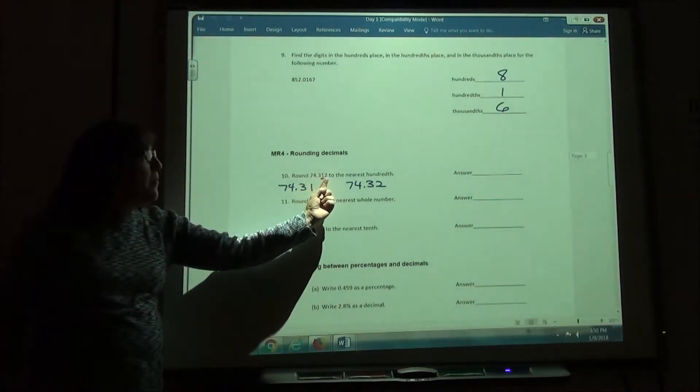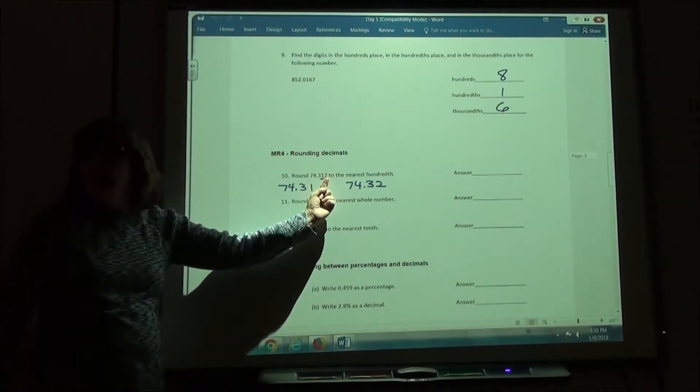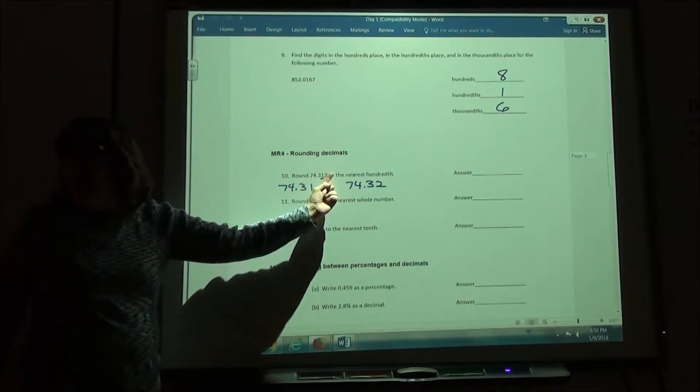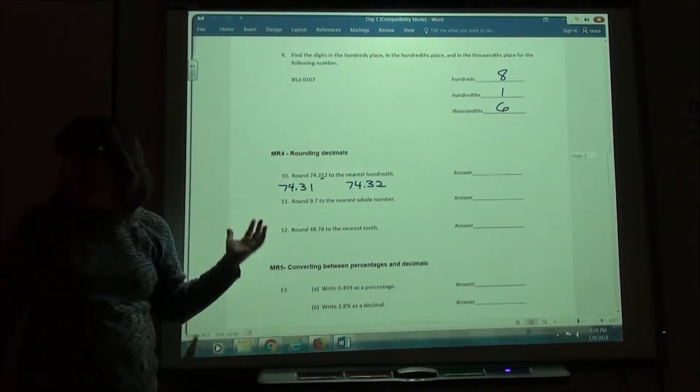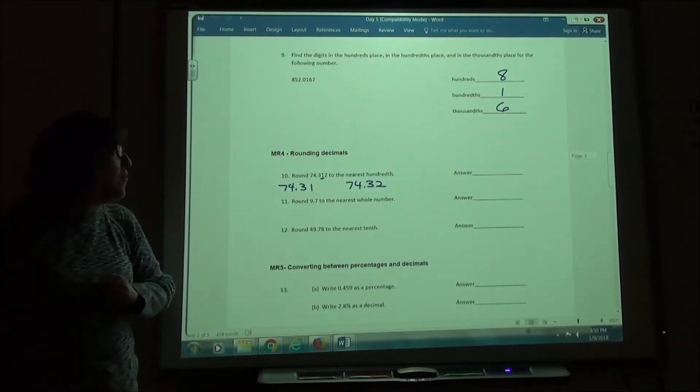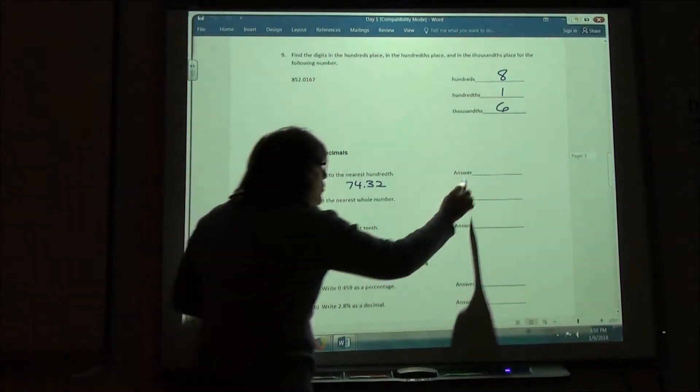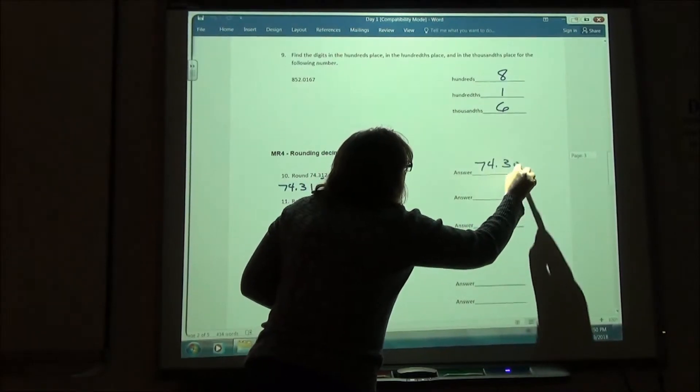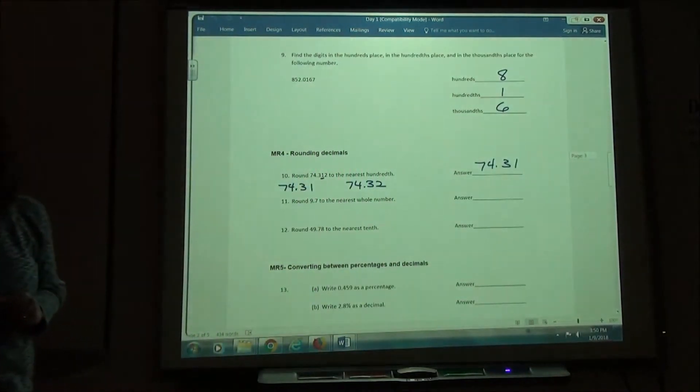I look at the number behind the 1. If it is 5 or higher, I'm going to round it up. If it's less than 5, I use my number that I had originally, in this case, the 74.31. Since it's a 2, I'm just going to leave it at 74.31.